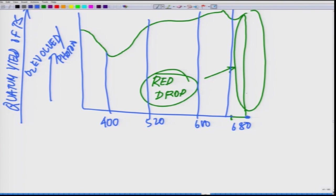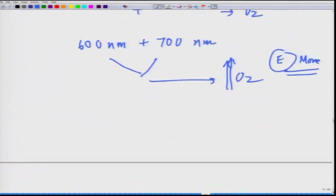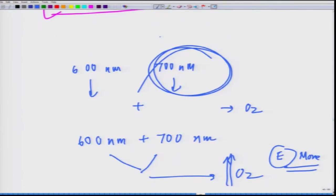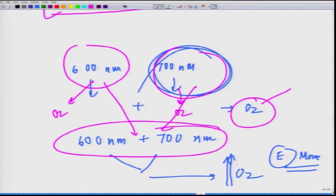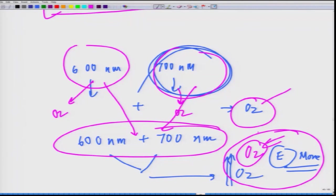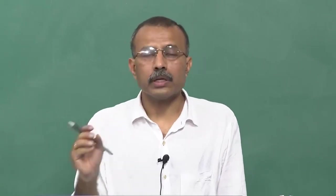But if you go all the way out to longer wavelengths, you see there is a drop. What was observed is: if you give the two wavelengths separately and see the oxygen evolution from each, and add them up — some moles of oxygen. Now if you couple both of them, you have a mixture of both wavelengths, and you get a higher quantity of oxygen evolved.